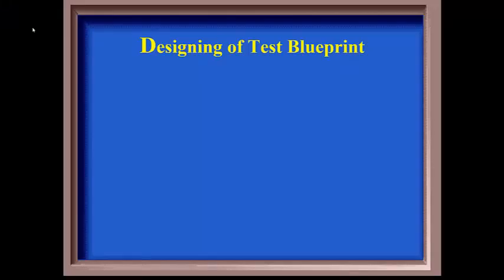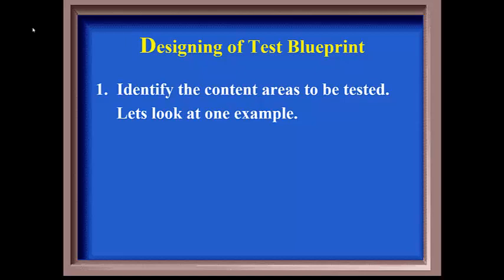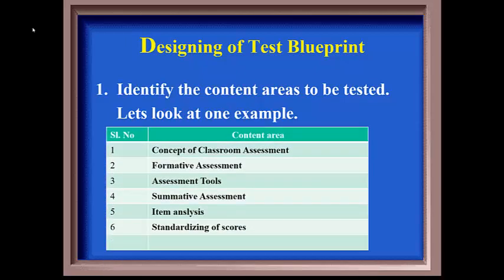Now we will study the steps involved in designing test blueprint. Step number one, we have to identify the content area to be tested. Let's look at one example. In this example, we will design a test blueprint for Educational Assessment and Evaluation AST 501. You all know there are six units: concept of classroom assessment, formative assessment, summative assessment, assessment tools, item analysis, and standardizing of scores. First, we have to list all the units in your subject or module.